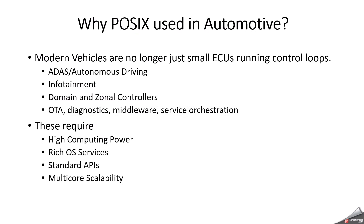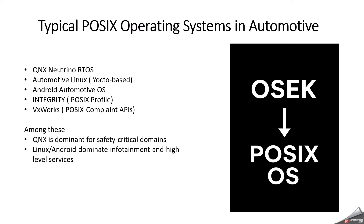These ECUs run vision algorithms, AI/ML workloads, service-oriented architecture, and over-the-air updates. This is not possible with an OSEK-style operating system because OSEK is intentionally minimal. The typical POSIX operating systems used in automotive are: micro-kernel architecture QNX, Automotive Linux based on Yocto, Android Automotive Operating System, POSIX Profile, and VxWorks.